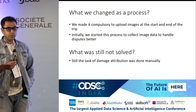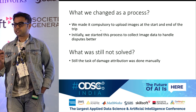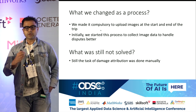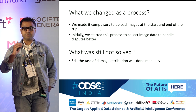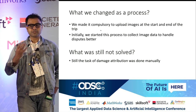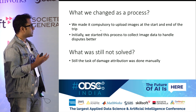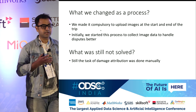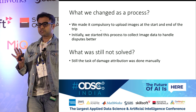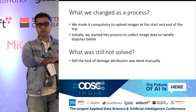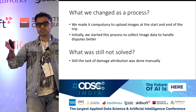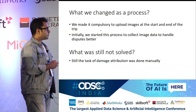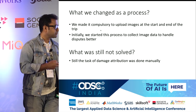What did we change as a process? To even solve this problem, the basic thing you need is an image. Recently, about four or five months back, we introduced a checklist module that you have to fill at the start of every trip, where you capture images of the car from all four sides. This gives us a good enough database of images. Initially we started this process so that every time we put a charge, we have verification that a damage was caused, and that gets passed on to the city operations team so they can send the car to the workshop. However, damage attribution was still being done manually.